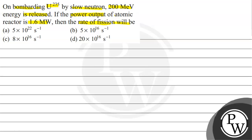So the question is that uranium-235 nucleus undergoes neutron bombardment which is slow, and in this case 200 mega electron volt energy is released. The power output of this atomic reactor is 1.6 megawatt, so I have to tell you the rate of fission.